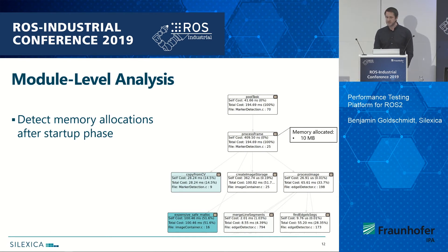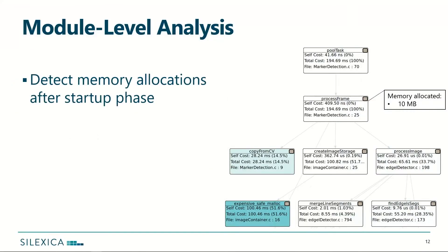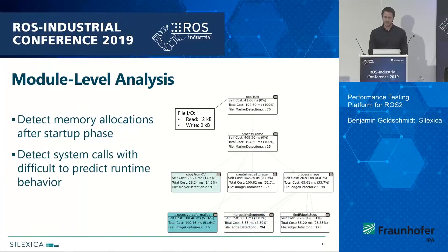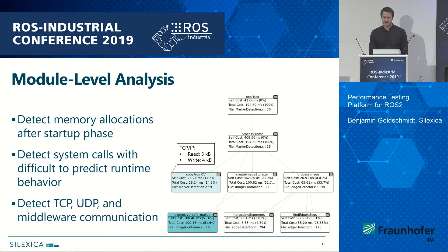For module-level analysis, the focus is mainly on things that are problematic when trying to run in real time. For example, in every safety manual you'll find that you should prevent dynamic memory allocations during application runtime because you have no guarantees there — and we can detect this automatically. Similarly, we detect other system calls with difficult-to-predict runtime behavior, such as file I/O where you have no guarantees when that function will return. The file I/O may be fine, but it may also be something left over during debugging that easily goes into production. We can also detect TCP and UDP connections and things happening in the middleware.